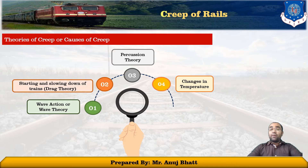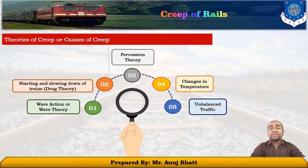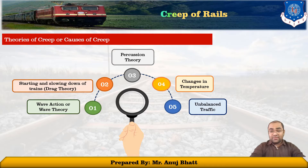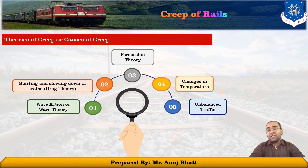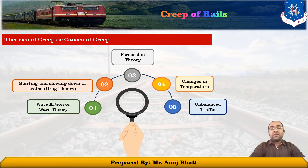The fourth cause is change in temperature. Creep may also be due to unequal expansion and contraction of the rail owing to changes in temperature, and the creep is more rapid during hot weather. The fifth cause is unbalanced traffic. In a single-line system, if heavy traffic runs in both directions, the creep is almost balanced. Otherwise, if traffic runs only in one direction, that will definitely lead to heavy creep. In a double-line system, since trains run unidirectionally on each line, creep occurs in both directions.